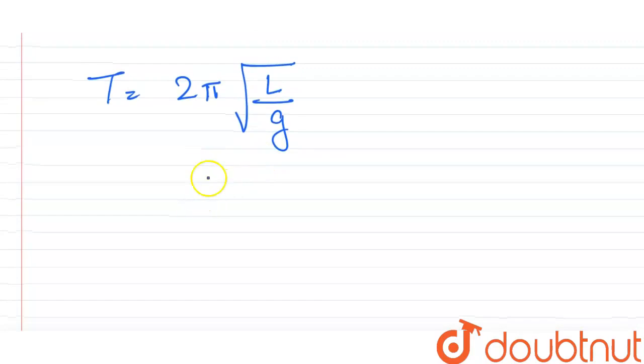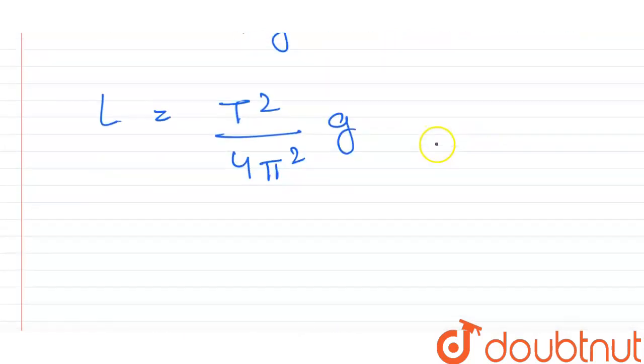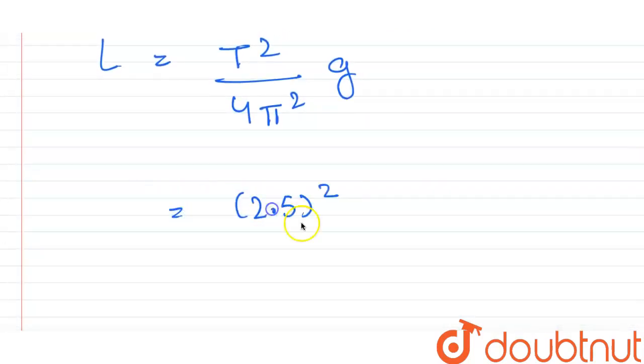So length will be equal to T square upon 4 pi square into g. This will be the length. And time is 2.5 seconds, so length will be equal to 2.5 square into 9.8 upon 4 into 3.14 square.